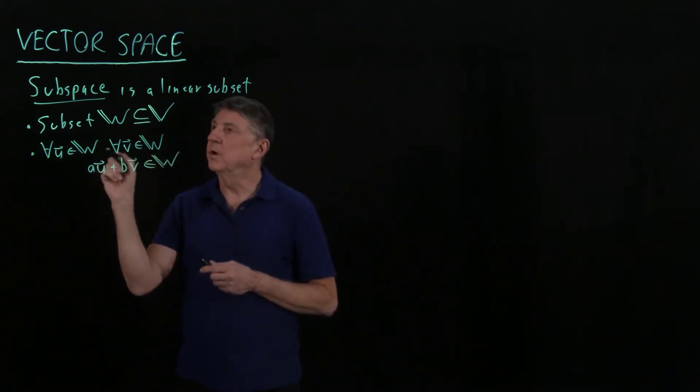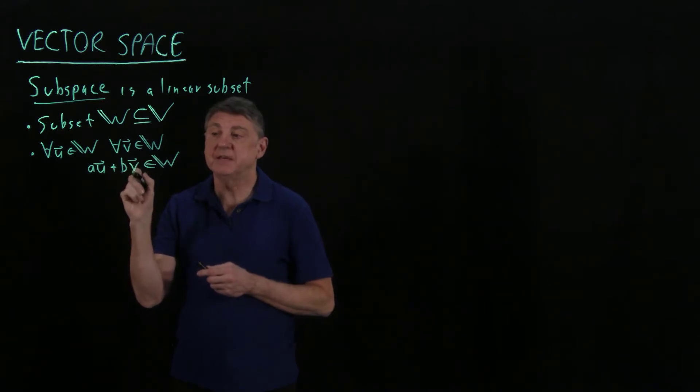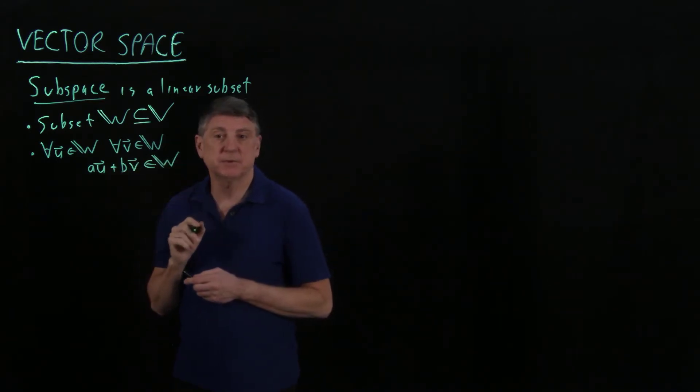So when we say linear and closed, this is the linear part, it's a linear combination, any linear combination, and then closed means it's in the subspace.